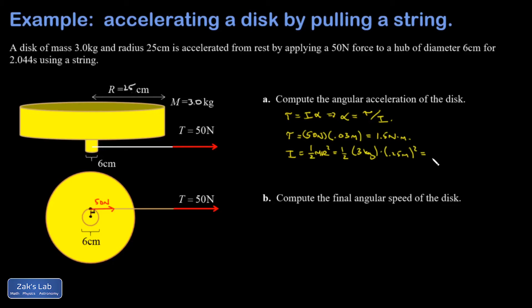All right, when I crunch the numbers on the moment of inertia, I come out with 0.0938 kilogram meters squared. So finally, I can get the angular acceleration - that's torque over moment of inertia.